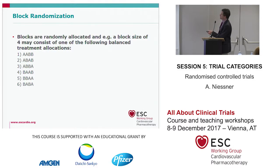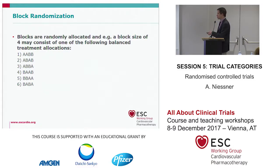Here we have an example of block randomization with blocks of four patients. In each block, we have equal distribution of the treatment arms — for example, 2A to 2B in different orders. You randomize the block numbers, choosing a number between 1 and 6, then take the next block. After each block, you are guaranteed equal numbers of each intervention.